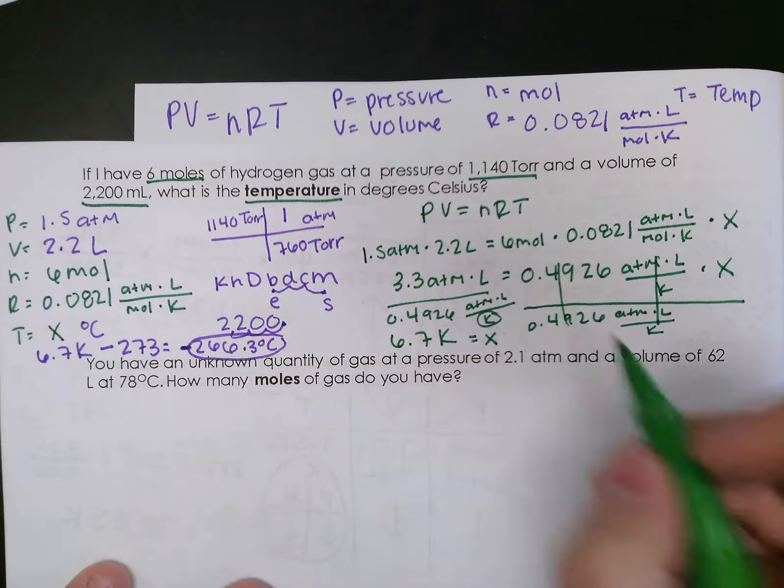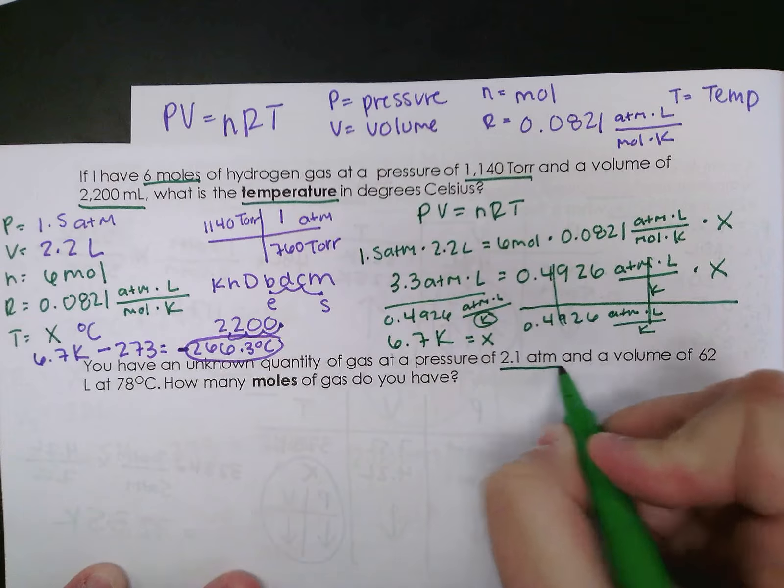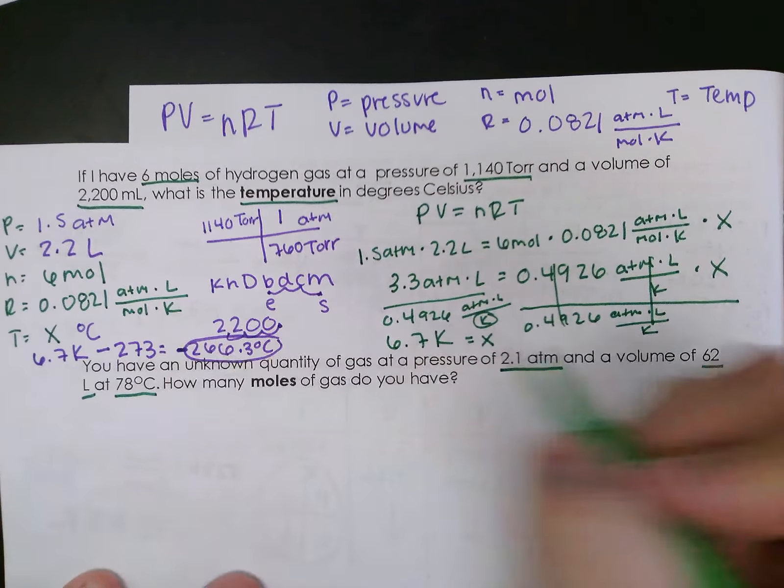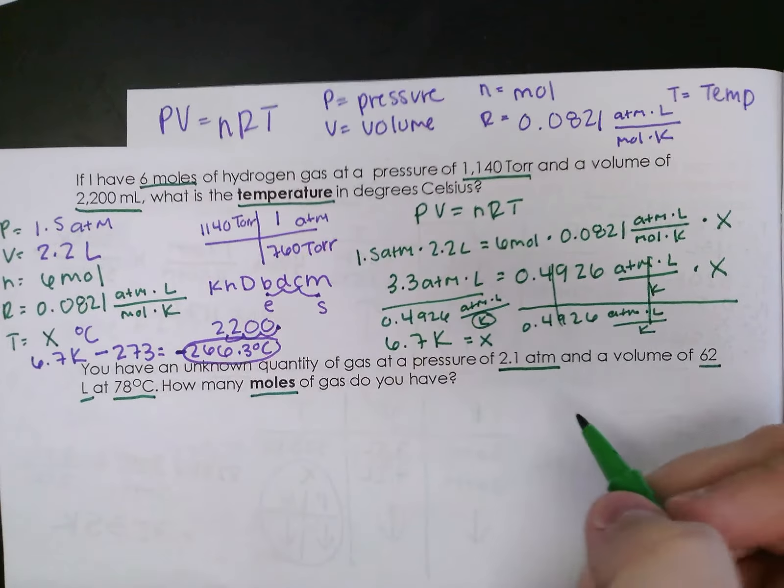You have an unknown quantity of gas at a pressure of 2.1 atmospheres and a volume of 62 liters at 78 degrees Celsius. How many moles of gas do you have?